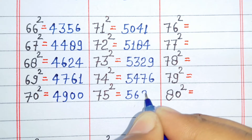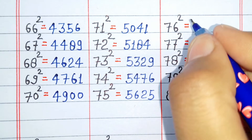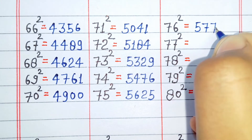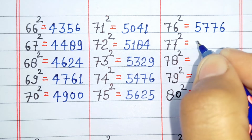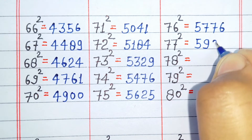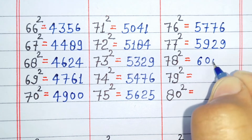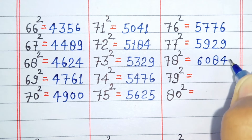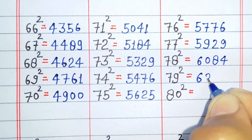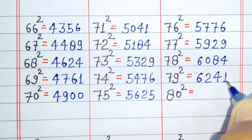Square of 75 is 5625. Square of 76 is 5776. Square of 77 is 5929. Square of 78 is 6084. Square of 79 is 6241.